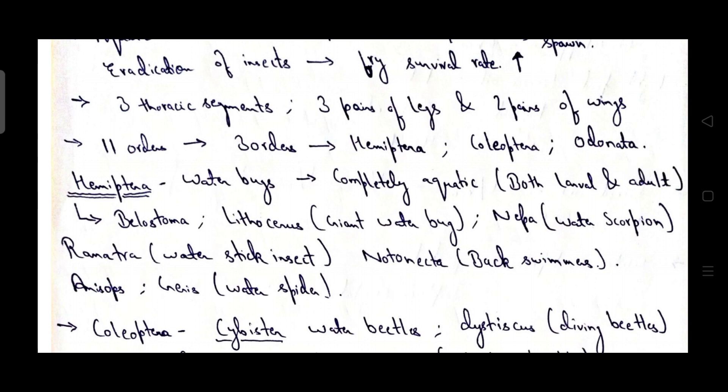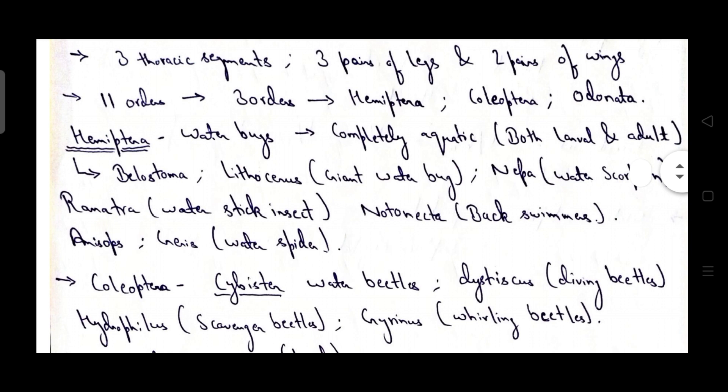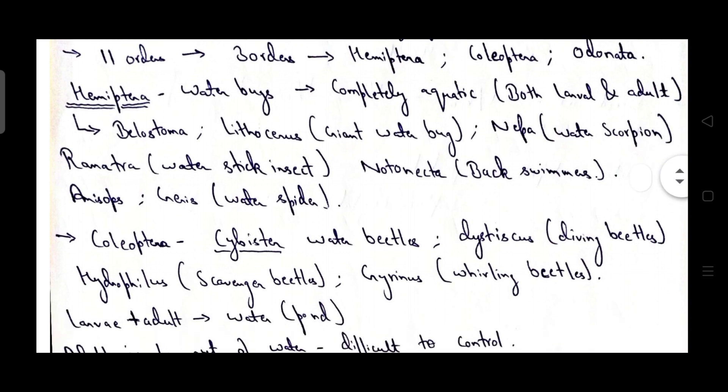Out of 11 orders, three important orders of aquatic insects include Hemiptera, Coleoptera, and Odonata. Hemiptera consists of water bugs. These are basically completely aquatic, both larval as well as adult forms are aquatic.